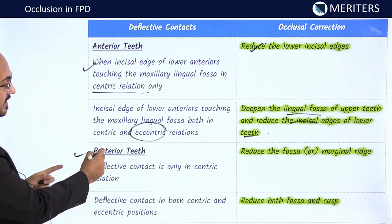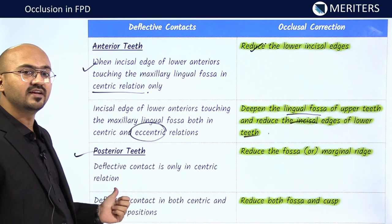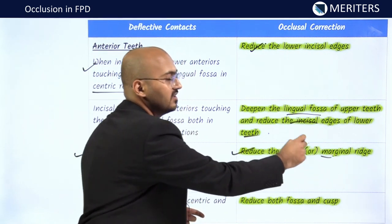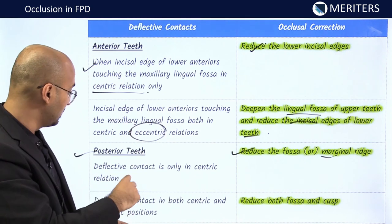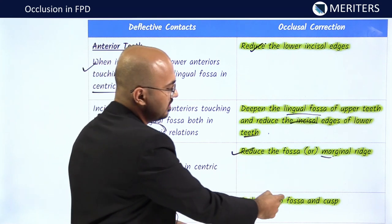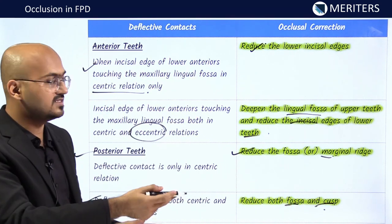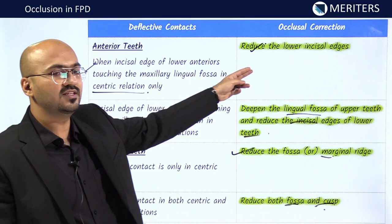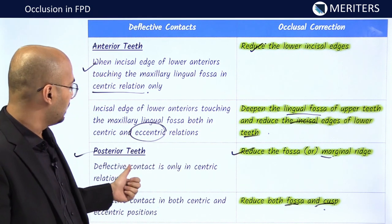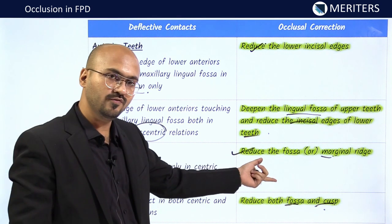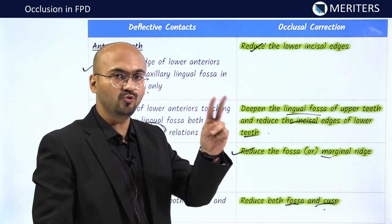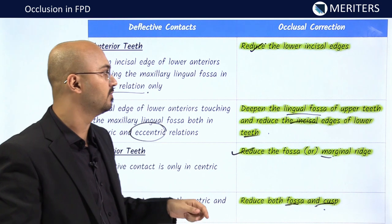For posterior teeth: if the deflective contact or interference is only in centric relation, reduce the fossa or marginal ridge — not the cusp. If the deflective contact is in both centric and eccentric relation, reduce both the fossa and the cusp. Summary rule: if only centric, reduce incisal edges or fossa; if centric and eccentric, reduce fossa plus cusp tips. For two problems you reduce two things.